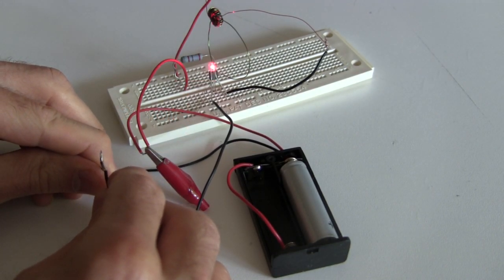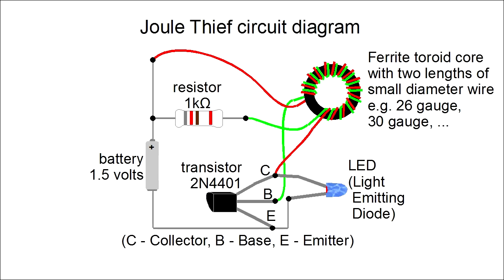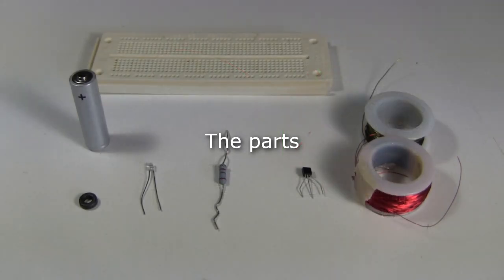Of course to us it looks like the LED is always fully powered. Here's a circuit diagram you'll need if you want to make one of these Joule Thiefs. And here are the parts you'll need.